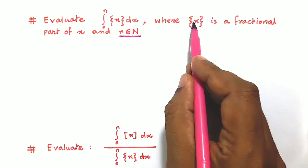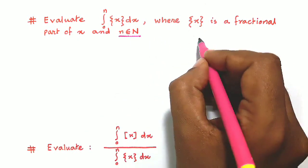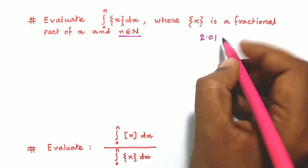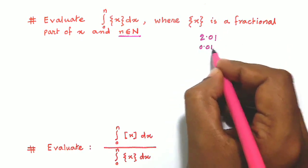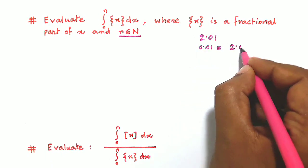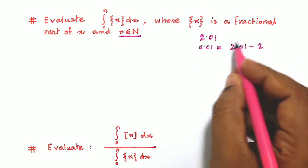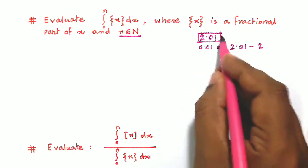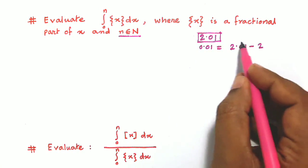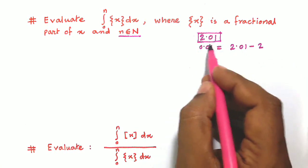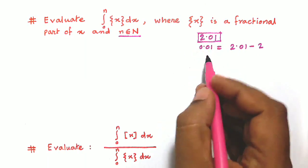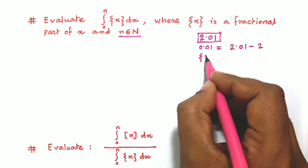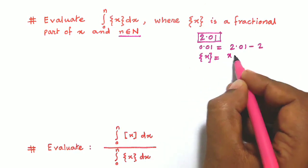First, we learn what is the fractional part of x. For example, consider 2.01: 2 is the integral part and 0.01 is the fractional part. This fractional part can be obtained as 2.01 minus 2, that is, the original number minus its integral part. So the fractional part of x, written as curly bracket of x, equals x minus the integral part of x.